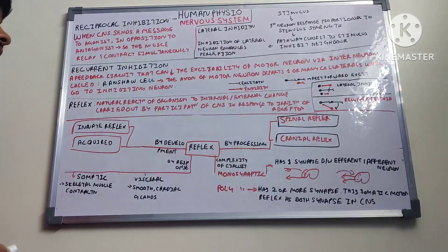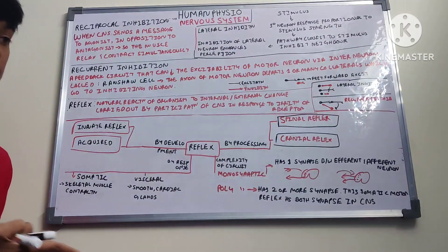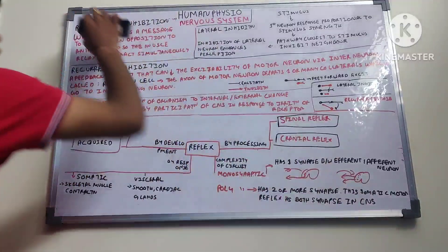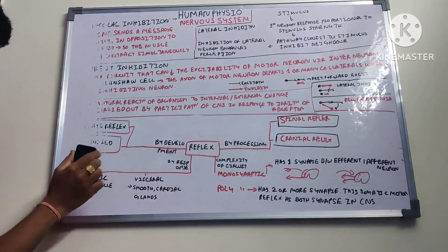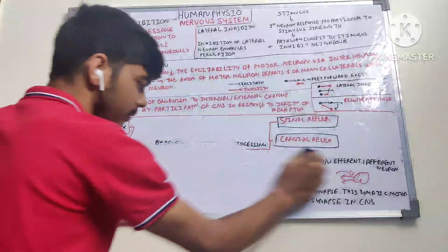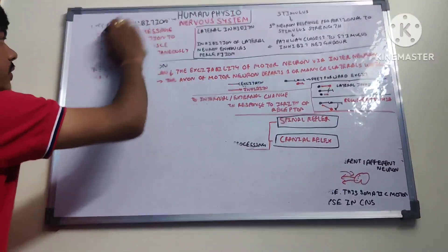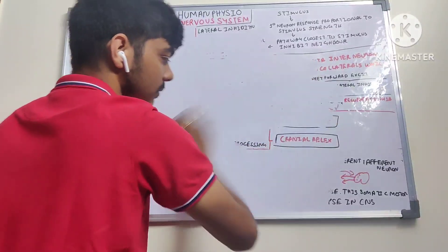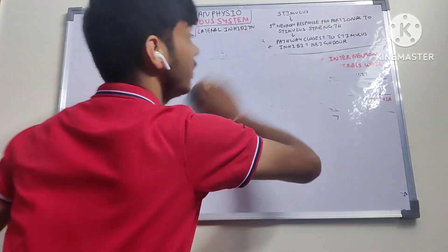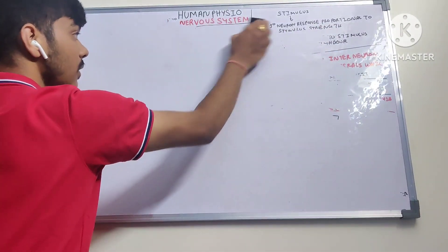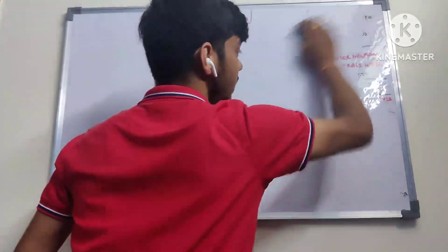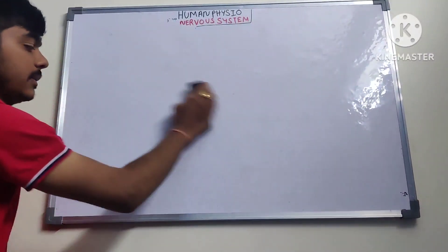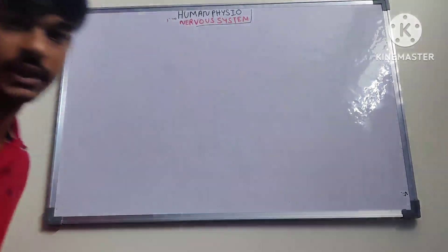Next we will study about the feedback mechanism — what it is, how it works, and why it is necessary. There are basically two types: positive and negative feedback. With this we wrap up the nervous system, and then we will study about the autonomic division — the sympathetic and parasympathetic nervous system — in detail.